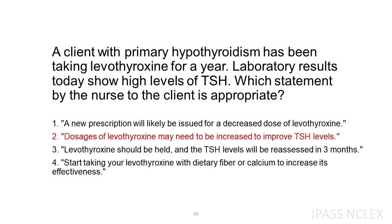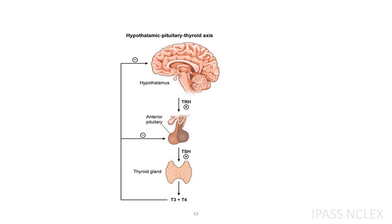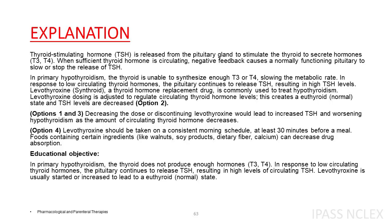Correct answer. Thyroid stimulating hormone, TSH, is released from the pituitary gland to stimulate the thyroid to secrete hormones, T3 and T4. When sufficient thyroid hormone is circulating, negative feedback causes a normally functioning pituitary to slow or stop the release of TSH. In primary hypothyroidism, the thyroid is unable to synthesize enough T3 or T4, slowing the metabolic rate. In response to low circulating thyroid hormones, the pituitary continues to release TSH, resulting in high TSH levels.